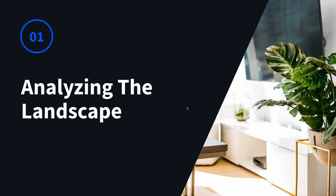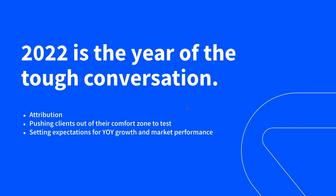First and foremost, analyzing the landscape. I think the biggest thing for agencies is trying to have a tough conversation this year. There's a lot of things we are facing as an industry right now. Attribution is changing every single day. We put this deck together and Google decided to change their targeting and cookie list future as of yesterday, so we've updated this presentation to include that.